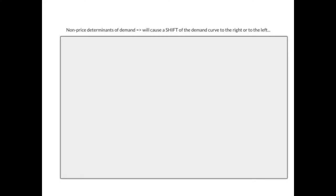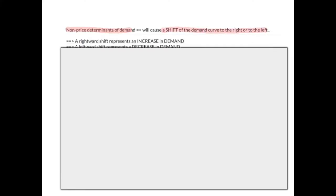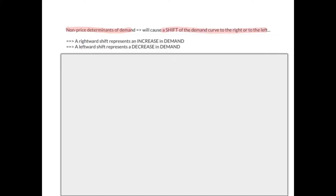The non-price determinants of demand are the factors that cause a shift of the demand curve to the right or to the left. A rightward shift represents an increase in demand and a leftward shift represents a decrease in demand. The first non-price determinant is income.